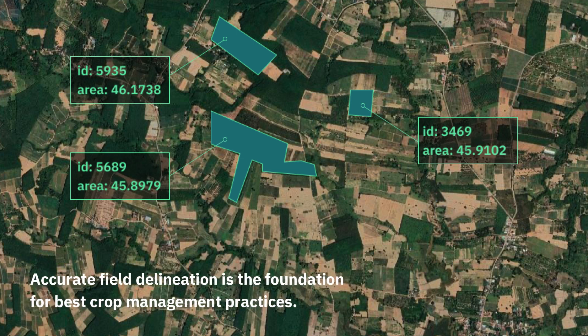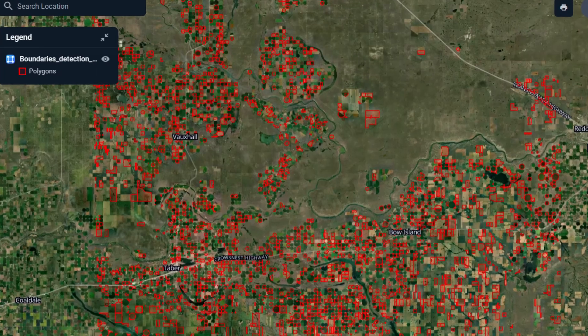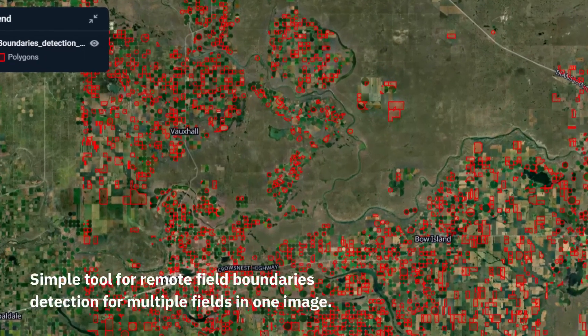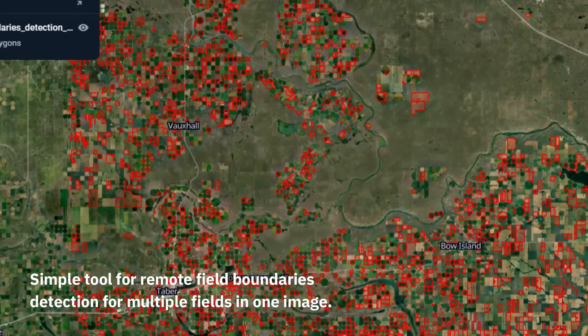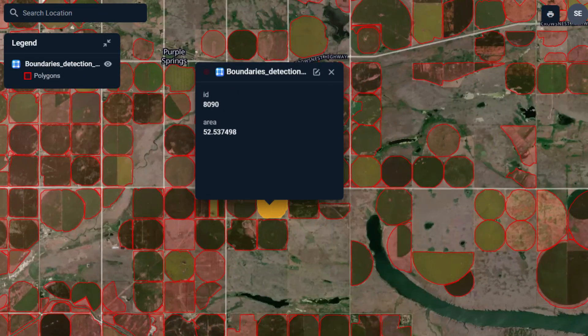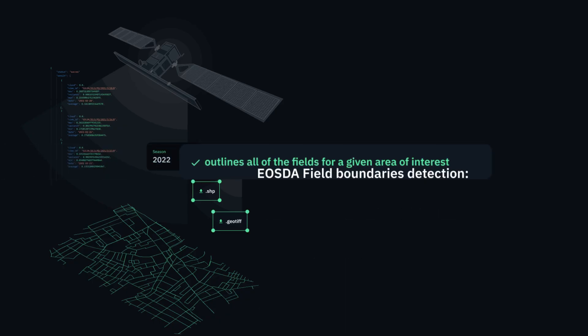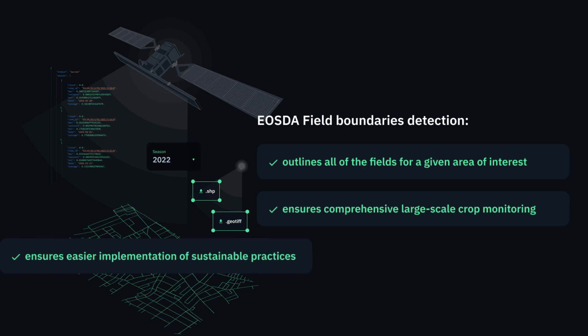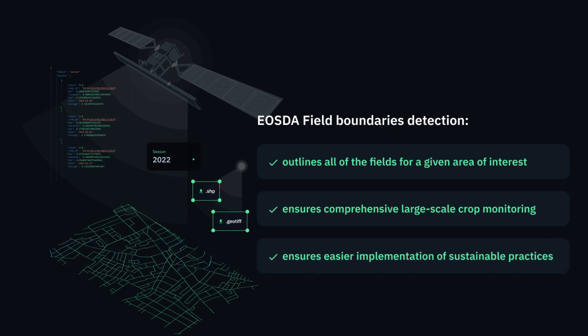Accurate field delineation is the foundation for best crop management practices. Our team of R&D scientists and geospatial analysis experts have developed a simple tool that enables you to remotely detect boundaries of multiple fields in a satellite image. The name is EOSDA Field Boundaries Detection. This solution outlines all of the fields for a given area of interest, ensuring comprehensive large-scale crop monitoring and easier implementation of sustainable practices.